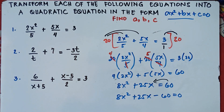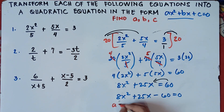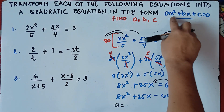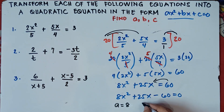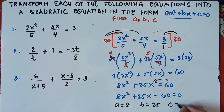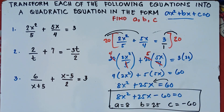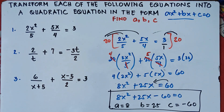So our A is beside x squared, which is 8. Our B is beside x, which is 25. And our C is the last term, negative 60. That's our answer for number 1. You pause the video and note that answer. Easy, right? Just find the LCM and distribute.